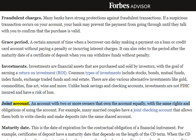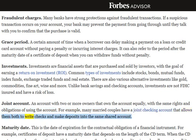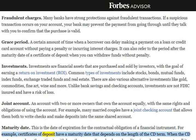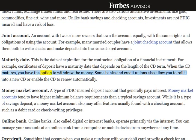Joint Account: An account with two or more owners that own the account equally, with the same rights and obligations of using the account. For example, many married couples have a joint checking account that allows them both to write checks and make deposits into the same shared account. Maturity Date: This is the date of expiration for the contractual obligation of a financial instrument. Certificates of deposit have a maturity date that depends on the length of the CD term. When the CD matures, you have the option to withdraw the money. Some banks and credit unions also allow you to roll it into a new CD, or enable the CD to renew automatically.